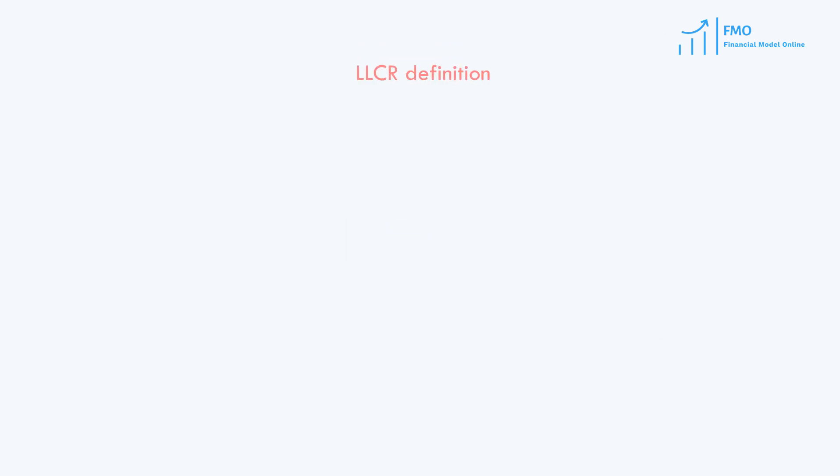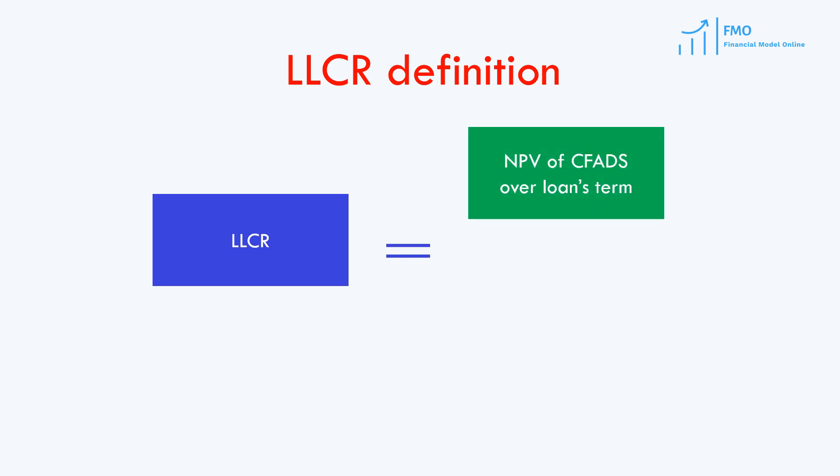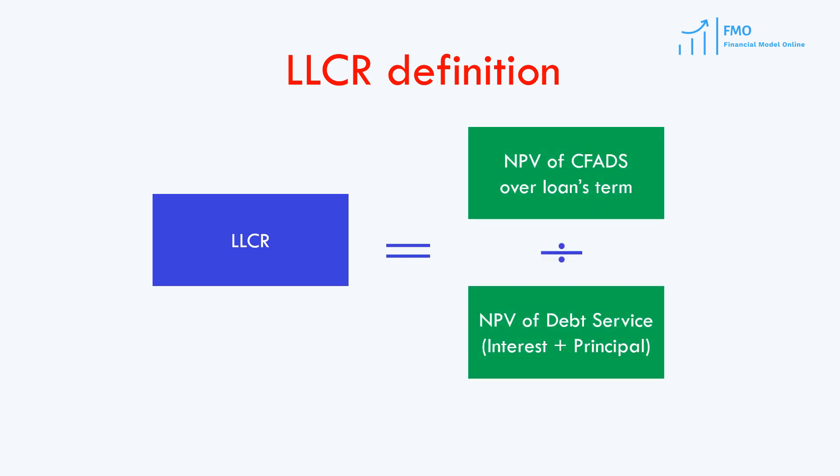Loan life coverage ratio, or LLCR, resolves this issue with DSCR. LLCR is a ratio of the present value of CFADs over the term of the loan to the present value of debt service. The discount rate used in calculating the present value of CFADs and debt service is the cost of the debt.